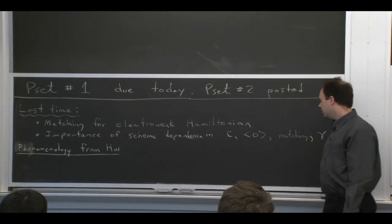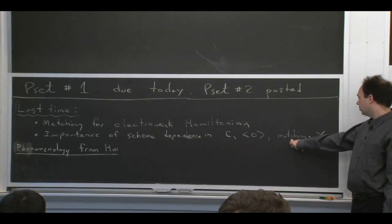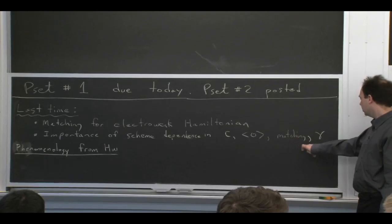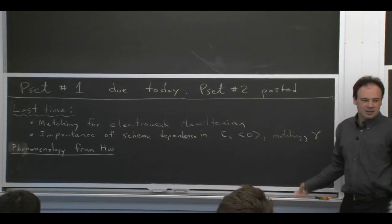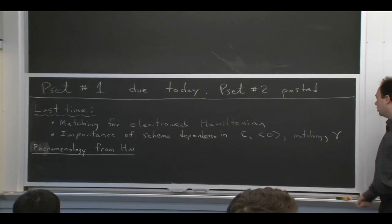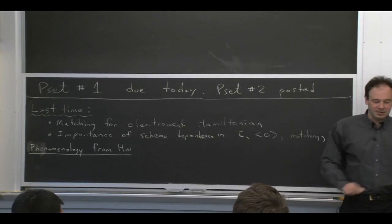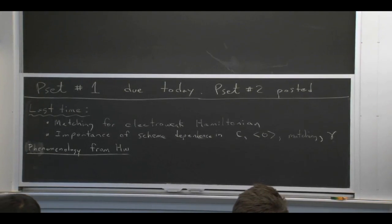So it can affect the Wilson coefficients, the matrix elements of operators, your matching coefficients at one loop, and your anomalous dimensions at two loops. But those scheme dependencies cancel out in observables. So it's important to take the scheme into account and work in the same scheme. But if you consistently use the same scheme for everything, then you will be OK.